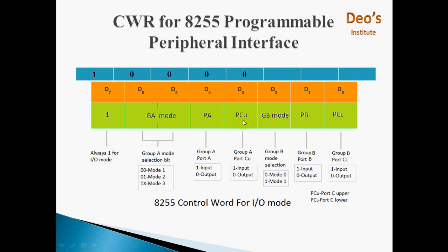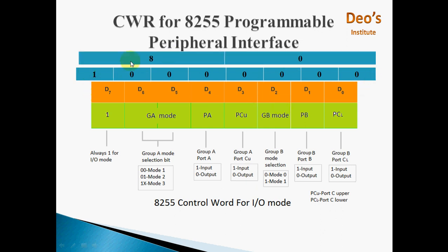Both Port A and Port C upper will be output. For Group B, we are using mode 0, so this value will be 0. Port B and Port C lower will also be used for output, so this bit will be 0. This forms our control word. The value of the control word is 1-0-0-0-0-0-0-0 in binary, which is 80H. This is why we set the control word register with the value 80H.